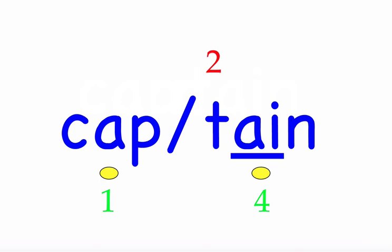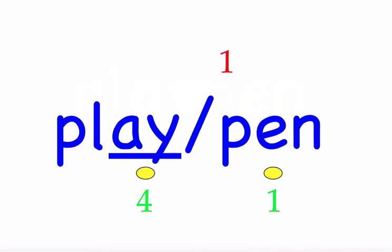The next word is 'playpen.' Place the baby in the playpen. First syllable 'play' — three sounds, P-L-A-Y. Second syllable 'pen' — three sounds, P-E-N. Mark the word. Playpen.